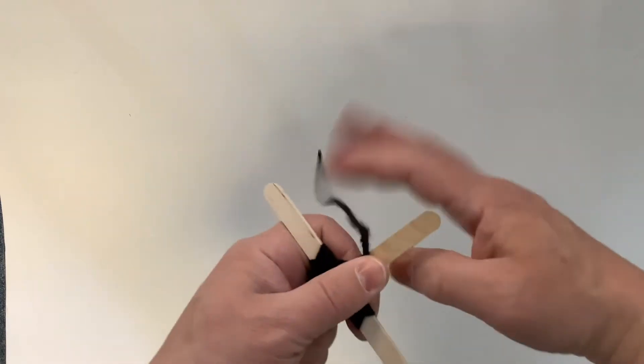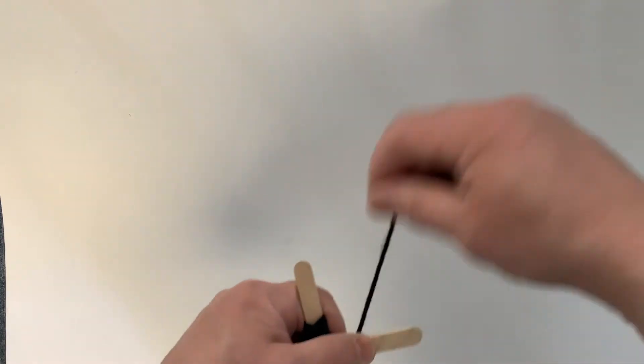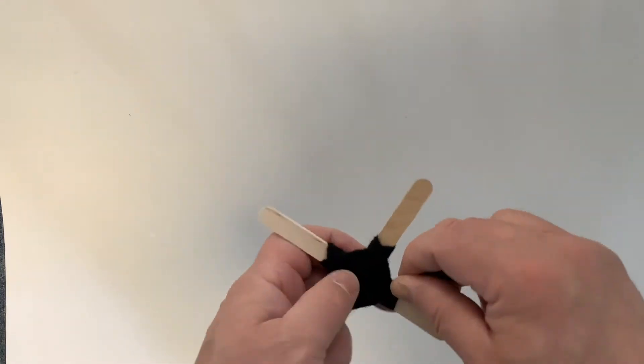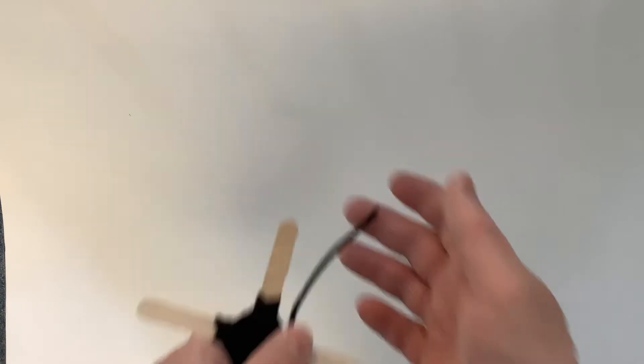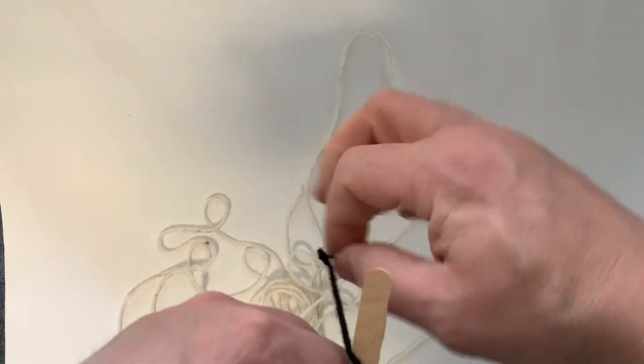Once you get to the end of that piece of yarn, you can see I'm getting close. You're going to want to tie on another color of yarn to make the next ring. There, I'm tying on another piece with a square knot.